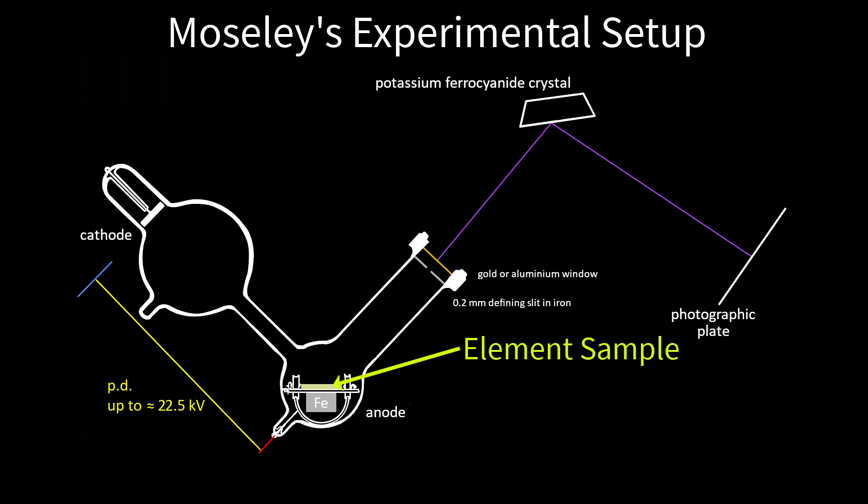This generated a lot of heat, so much that Moseley had problems with the elements vaporizing and cracking. Some particularly high energy electron impacts generated X-rays. Only about 1% of incoming electrons lose enough of their kinetic energy in a single event to generate an X-ray photon. Most lose their energy a bit at a time in lower energy interactions.